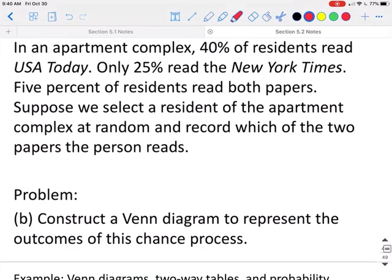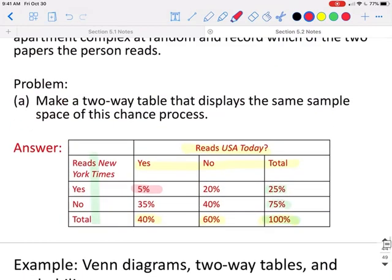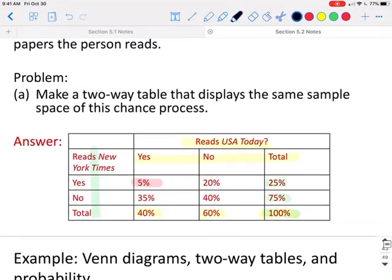We need to construct a Venn diagram to represent the outcomes of this chance process. So if we come back up here to our table and we were to create a Venn diagram, let's get a pencil.